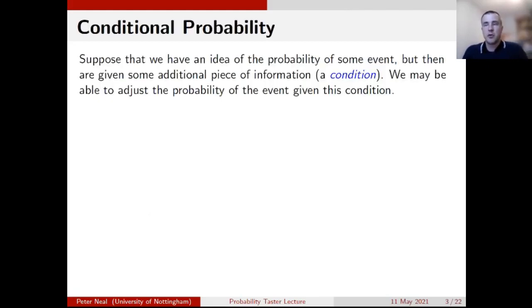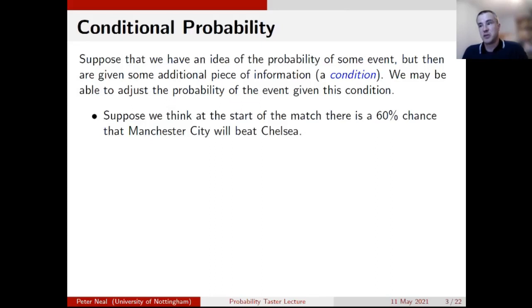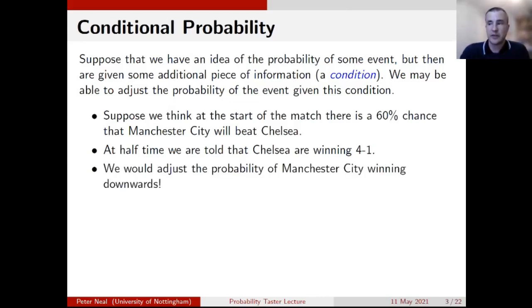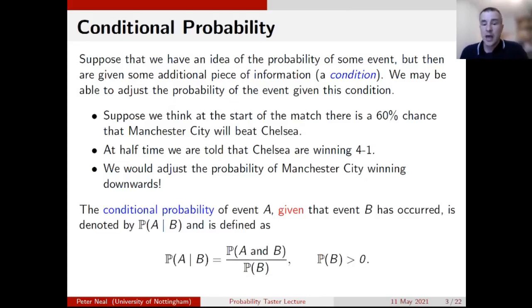We're going to start with the idea of conditional probability. We have a probability of an event — a way of measuring how likely something is. For example, sticking with football, we might have the probability of Manchester City beating Chelsea. For the Champions League final, we might say there's a 0.6 probability — a 60% chance — of Man City winning. But if at half time Chelsea are winning 4-1, then our probability of Man City winning probably goes down. Given that we know they're losing at half time, we adjust our probability that they'll win the match overall.